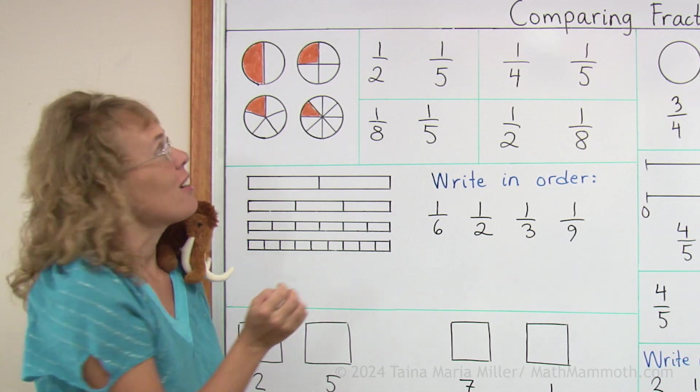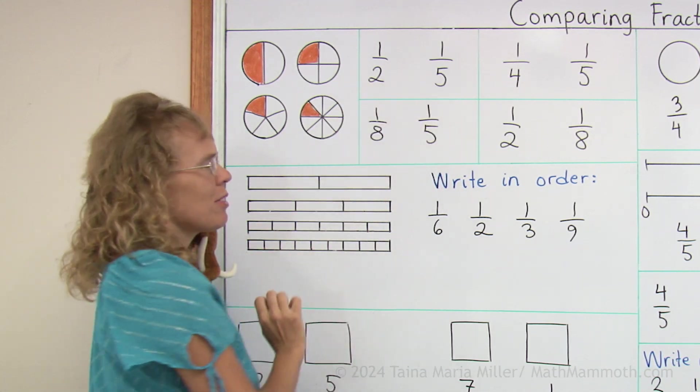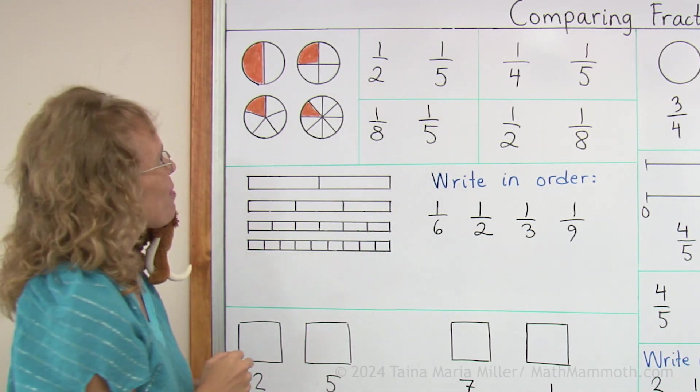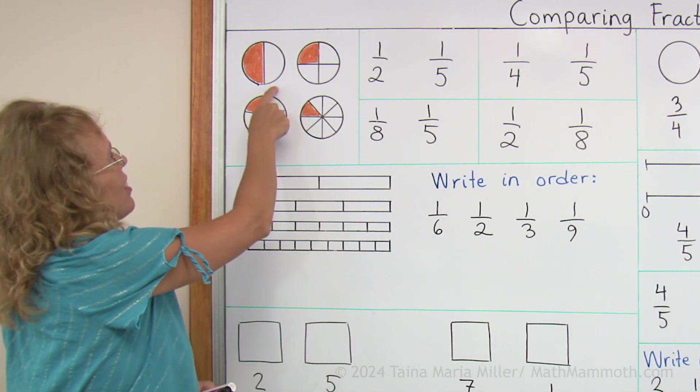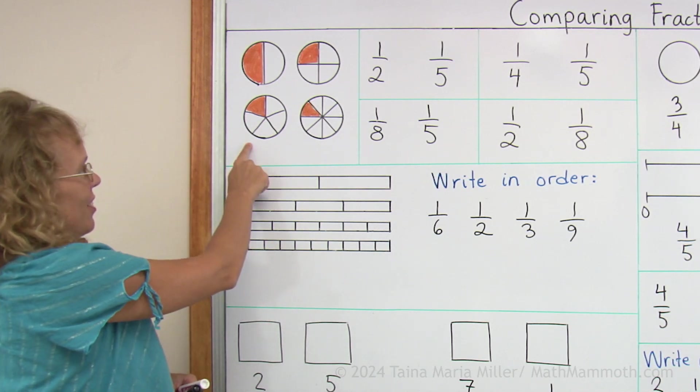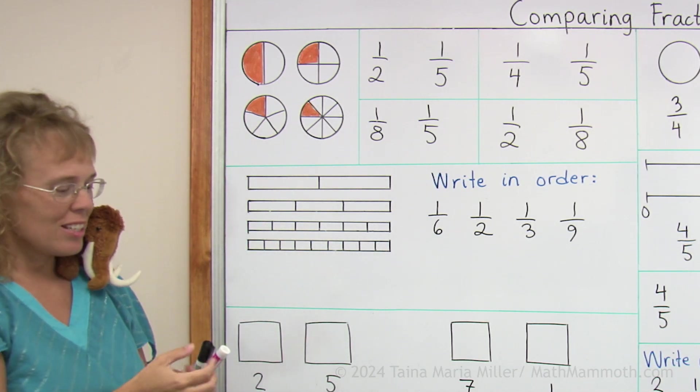Our first fractions to compare are here, one half and one fifth. Which is the greater fraction? I drew some pie pictures here for you to help you. One half is here, one fifth is over here, so it's easy to see which one is more. One half is more.